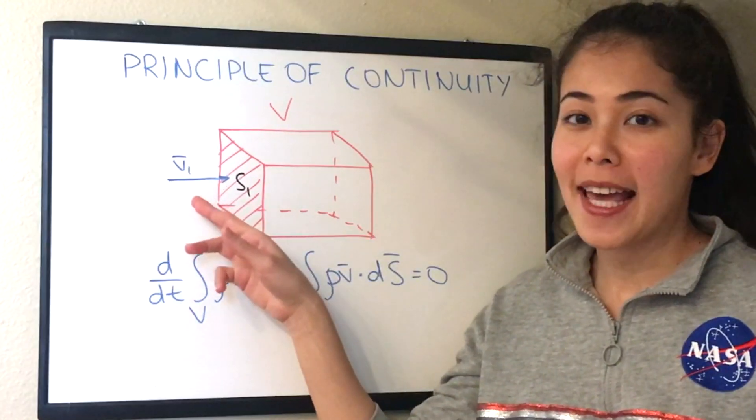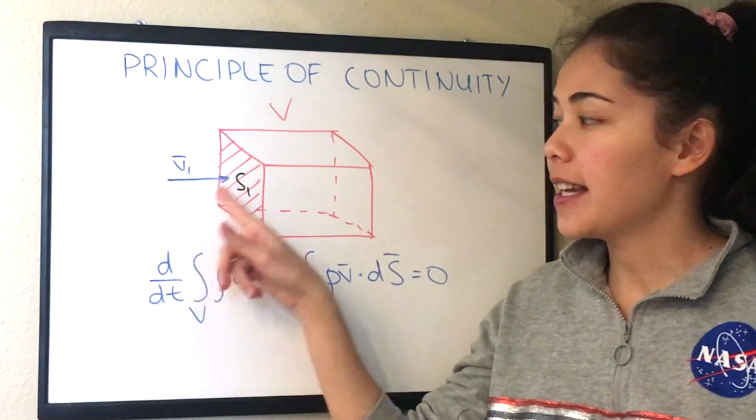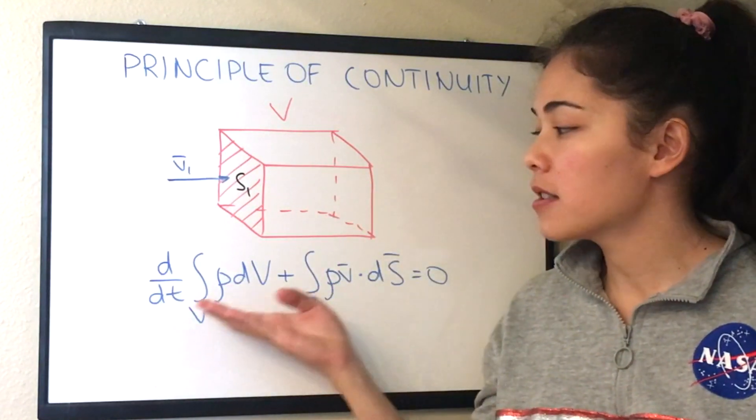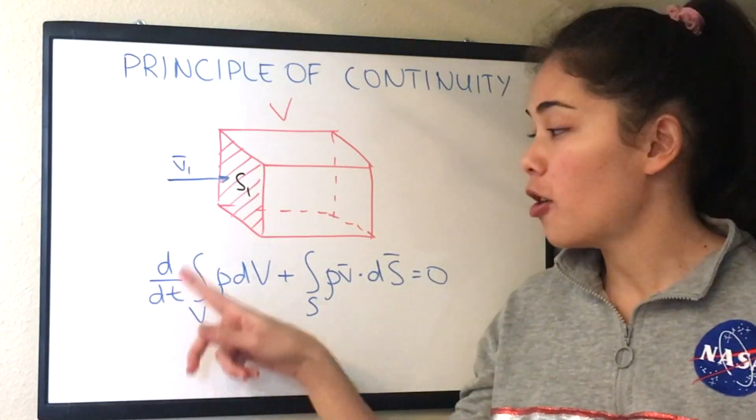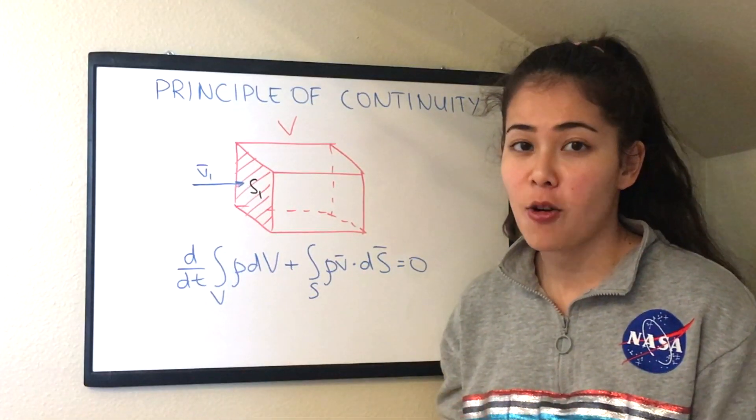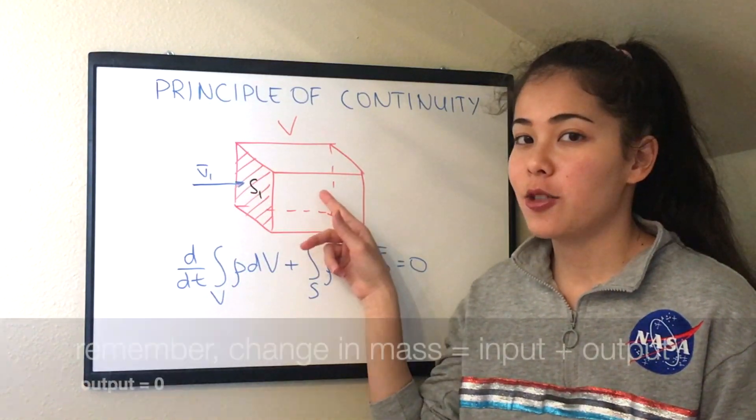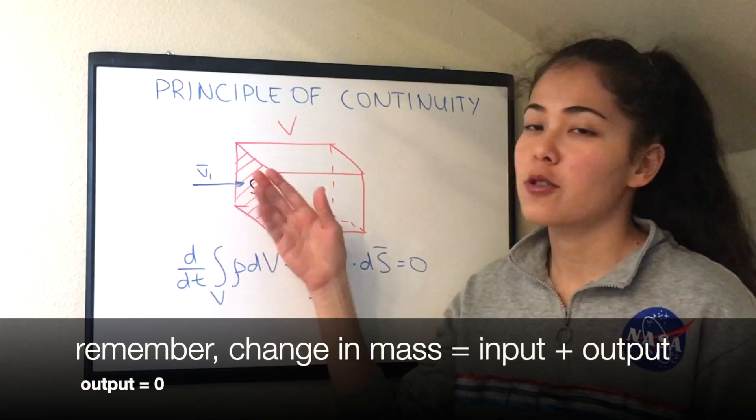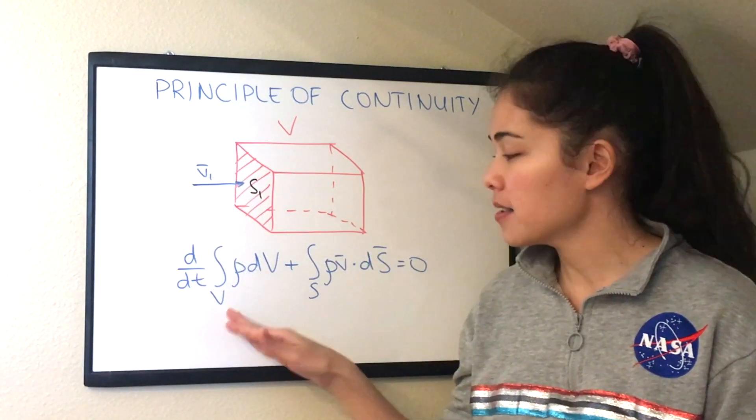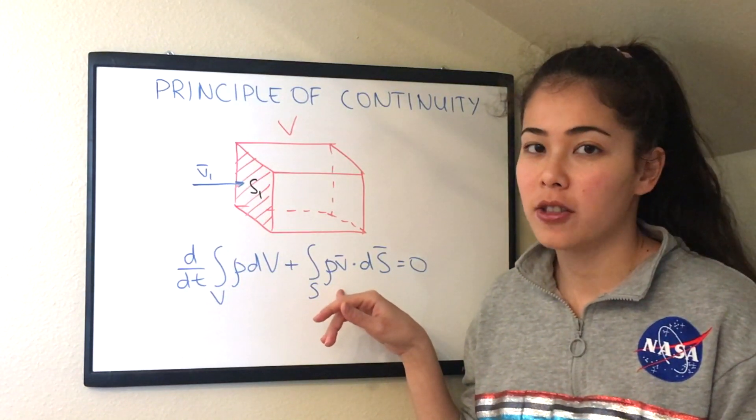So we have one input to the control volume. When the air mass enters into the control volume, what happens to the total mass? The total mass will change. And if you think about it physically or intuitively, you understand that the mass here will increase because we have continuous input of more air. So the change in mass will be positive because we have a positive input of air all the time.